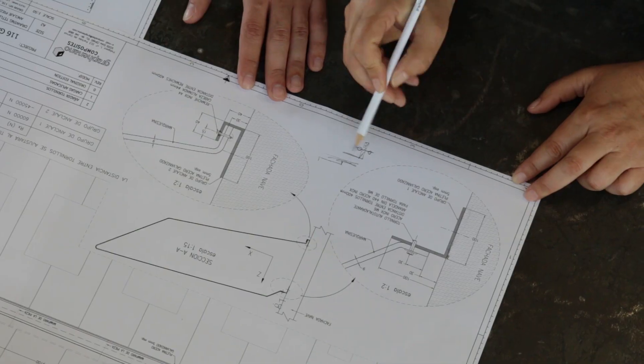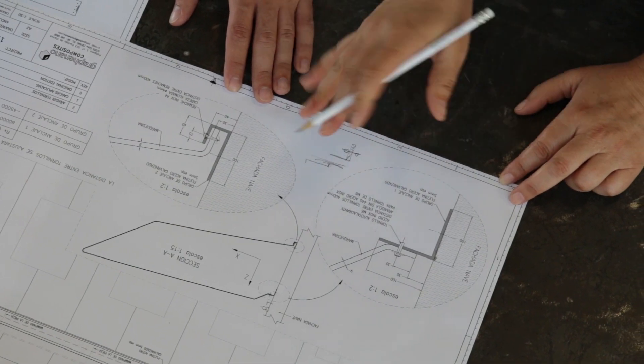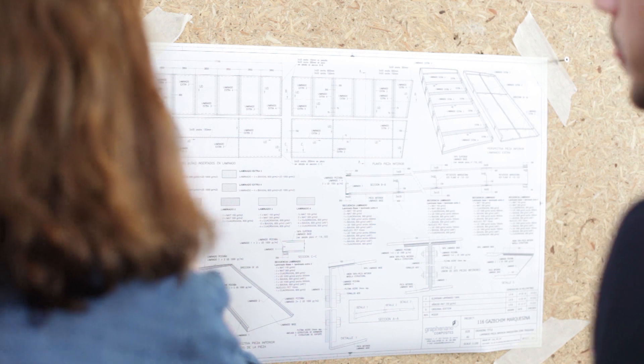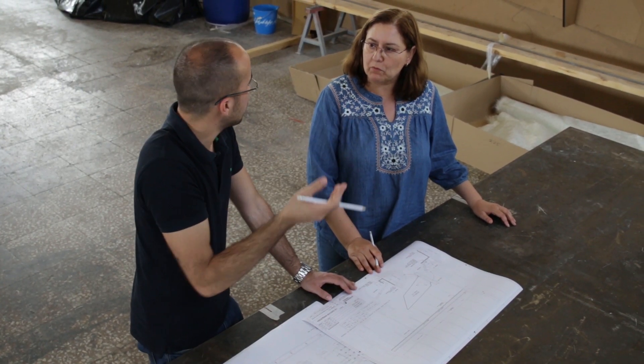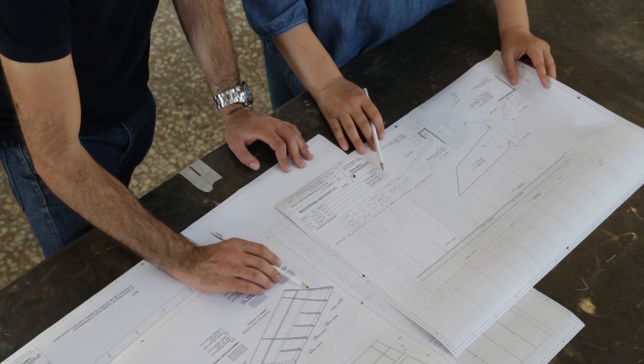The main part of the project consists of a large canopy with an avant-garde design at the highest level of engineering performance, where the advantages of composites applied to architecture are put in value to the maximum. Its design is the result of the synergy between naval and civil engineering.